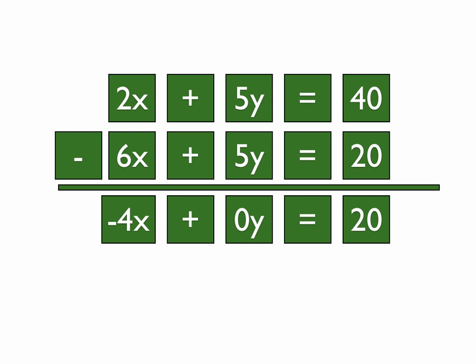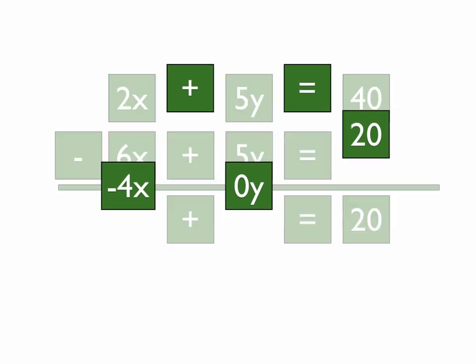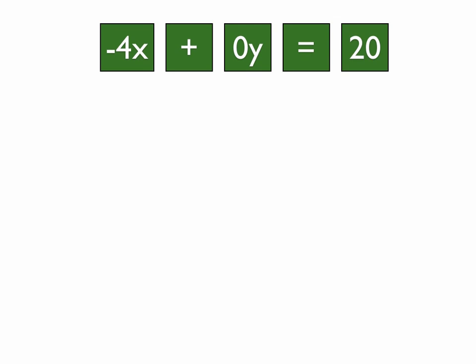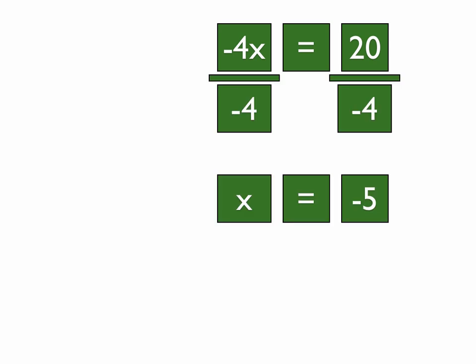But this time, the 0 is the y, so we can just take the y right out of there. So we have negative 4x equals 20, because we eliminated the y, and we divide both sides by negative 4, and x equals negative 5.